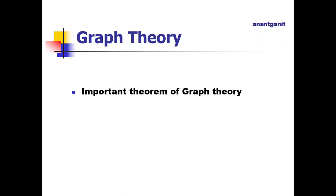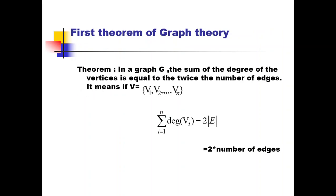In this video we'll discuss some important theorems of graph theory, based on the definitions from the last video lecture. The first theorem states: in a graph G, the sum of the degrees of all vertices is equal to twice the number of edges. This means for any graph, this relationship always holds.